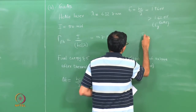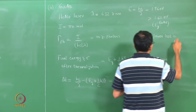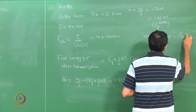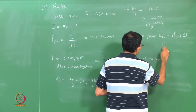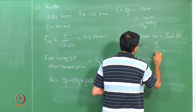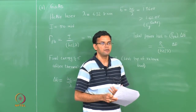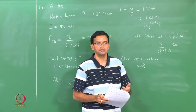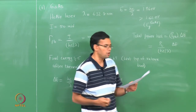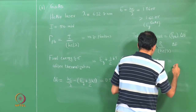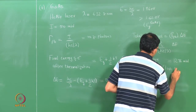This energy is lost by every electron generated, equal in number to the total photons incident. So the total power lost to thermalization is P_loss = Φ_ph × Δe = (P_L / (hc/λ)) × Δe. With P_L = 50 milliwatts, this works out to 12.76 milliwatts lost to thermalization.